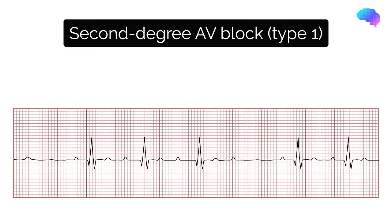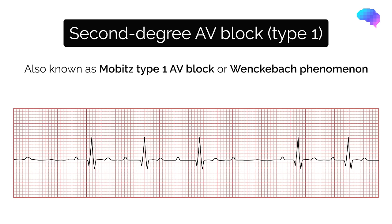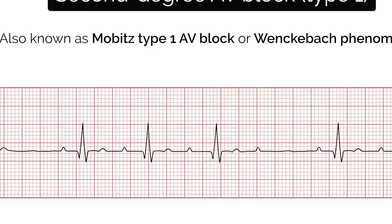Second degree AV block type 1 is also known as Mobitz type 1 AV block or Wenckebach phenomenon. Typical ECG findings include progressive prolongation of the PR interval until eventually the atrial impulse is not conducted and the QRS complex is dropped. AV nodal conduction resumes within the next beat and the sequence of progressive PR interval prolongation and eventual dropping of a QRS complex repeats itself. Second degree AV block type 1 is usually benign and rarely causes haemodynamic compromise — no intervention is required if the patient is asymptomatic.